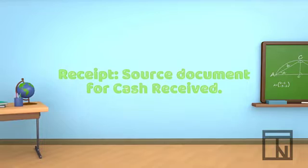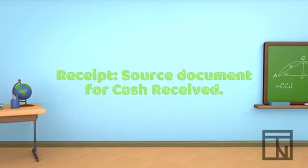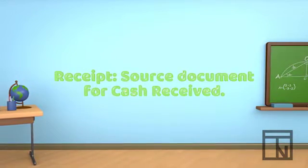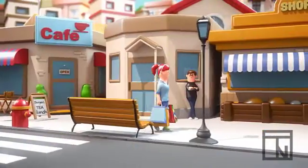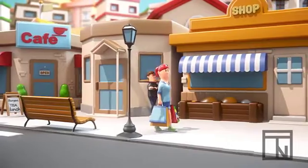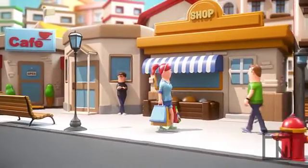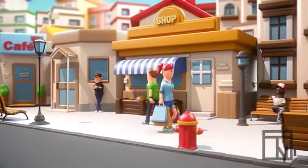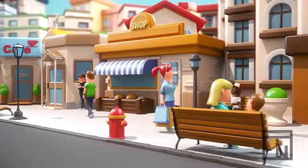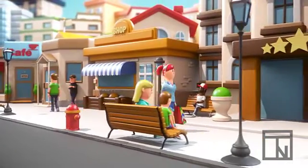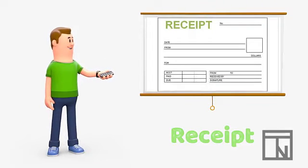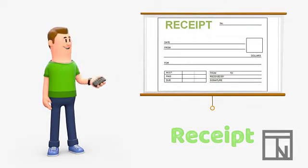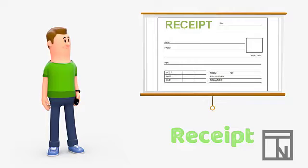If a customer pays in cash, the business typically provides a source document called a receipt that serves as a record of the receipt of cash from that customer. That's why it's called a receipt. Many people think that a receipt is a source document for money spent, since we are used to receiving receipts from stores when we buy something. But this is looking at the document from the customer's perspective. When the store gives you a receipt, it's a courtesy to you and a confirmation of your purchase, but it's really a source document for the store to prove they received cash from you and why.